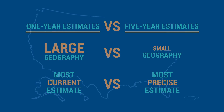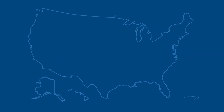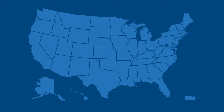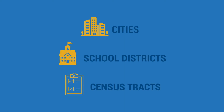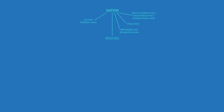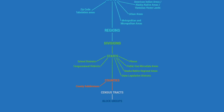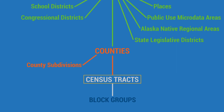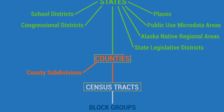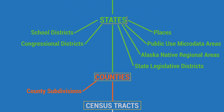Data from the ACS are tabulated for a variety of geographic areas, ranging from large areas such as the nation and states, to smaller areas such as cities, school districts, and census tracts. Many geographic areas are organized in a hierarchy, with smaller geographic areas nested within larger geographic areas. For example, census tracts are nested within counties, and counties are nested within states.